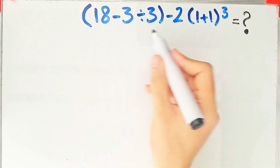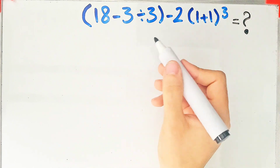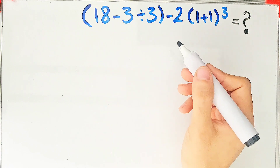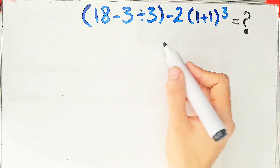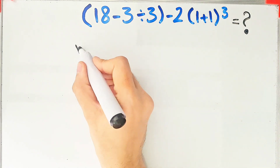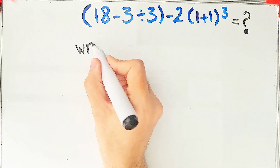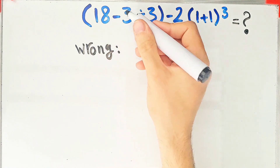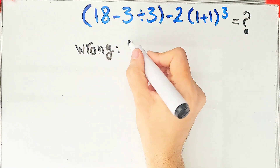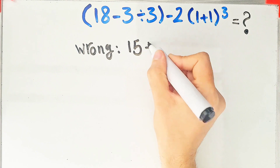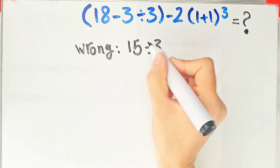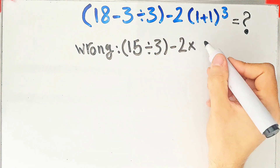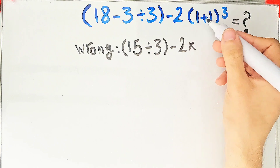Can you solve it? A lot of people get confused when they see this question — they don't know which operation to do first, so they often make a mistake. For example, some people solve this question like this: 18 minus 3 equals 15, 15 divided by 3 in the first parenthesis, then minus 2 times 1 plus 1.